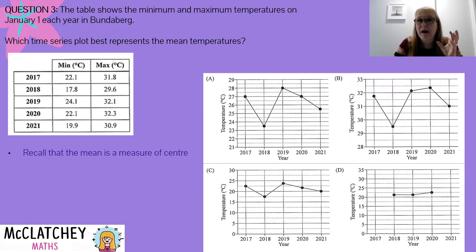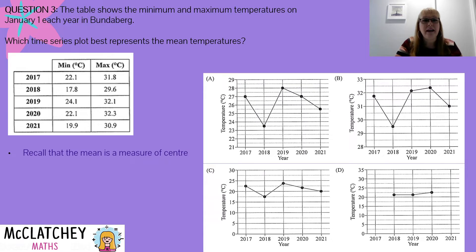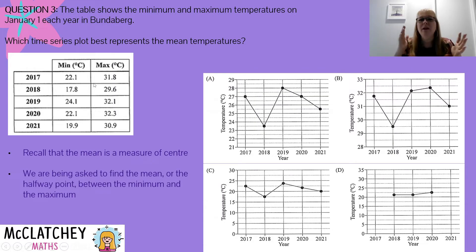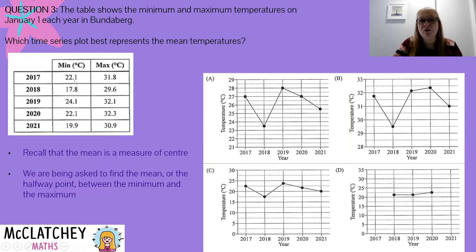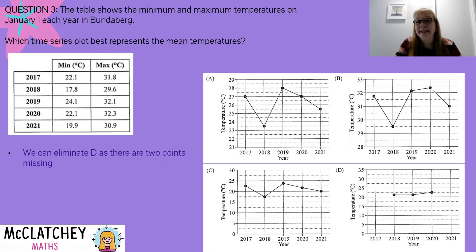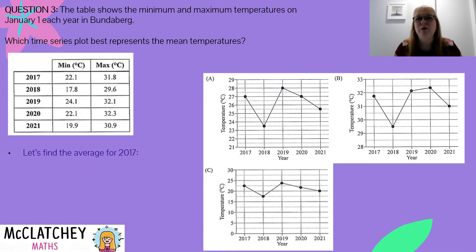We need to think about what the mean is — we'd recall this from junior mathematics, it's the average. So if I'm looking at two data points, I'm simply adding those together and dividing by two, giving a data point roughly halfway between the minimum and the maximum. We're looking at something about halfway between 22 degrees and 31 degrees for the first data point, 2017. So we can straight away eliminate D. If we look at D, there are only three data points altogether, but we actually need five data points — one, two, three, four, five. So we can get rid of that as an option.